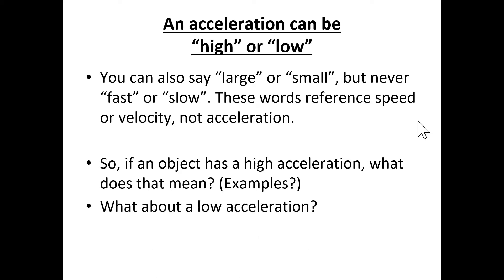What about a low acceleration? Low acceleration means the velocity is changing over a longer period of time. An example would be a train coming into or leaving a station. A train could have a very high velocity, but when it comes into a station it will begin slowing down a few miles out because it takes a long time to slow down. It also takes a long time to speed up, so when a train leaves the station, it takes a long period of time to increase its velocity.